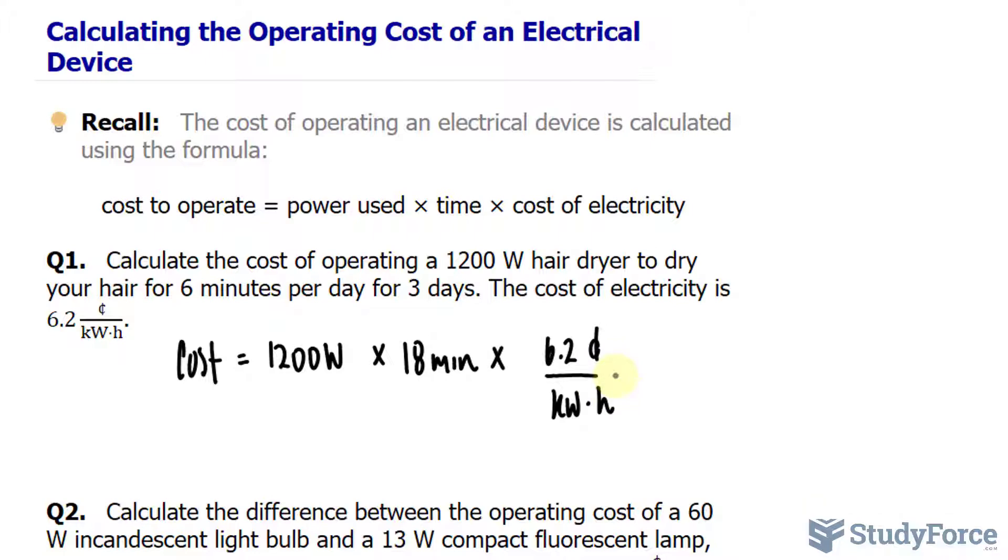Now before we continue, you'll notice that there are some discrepancies in the units being used. For example, the cost of electricity, its rate is in kilowatts and hours, whereas this value right here is in minutes. So we have to convert 18 minutes into hours so that the units are consistent.